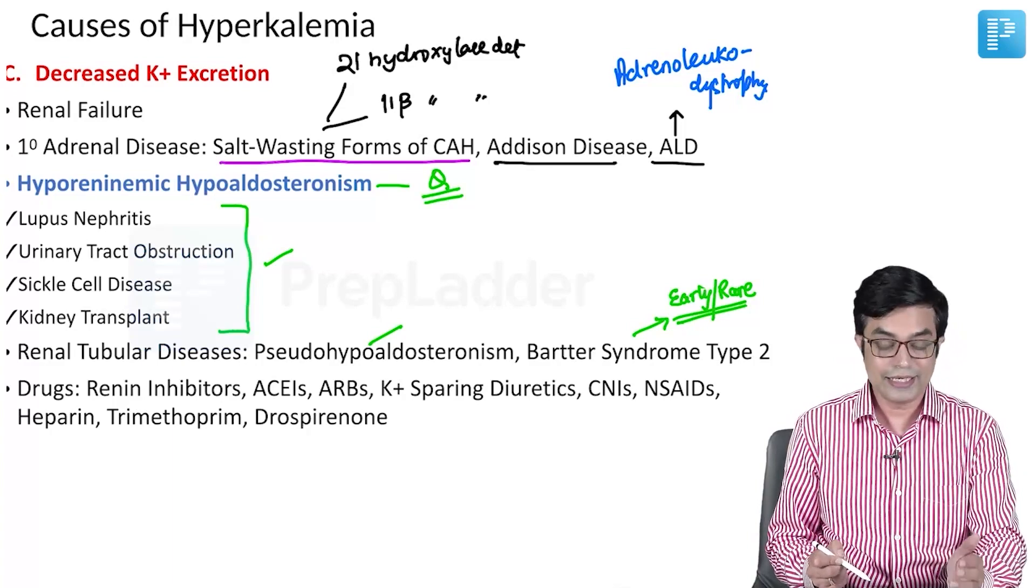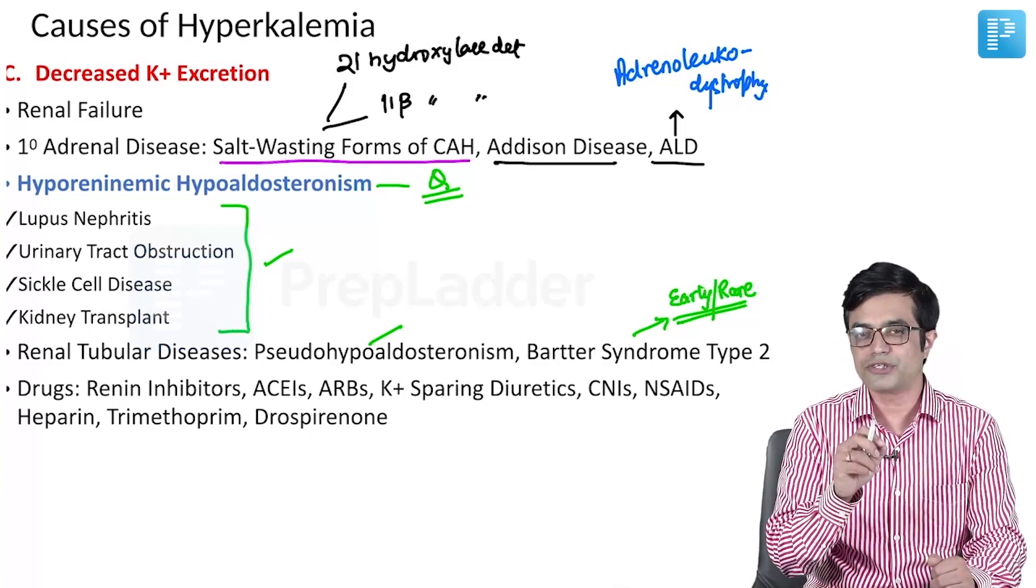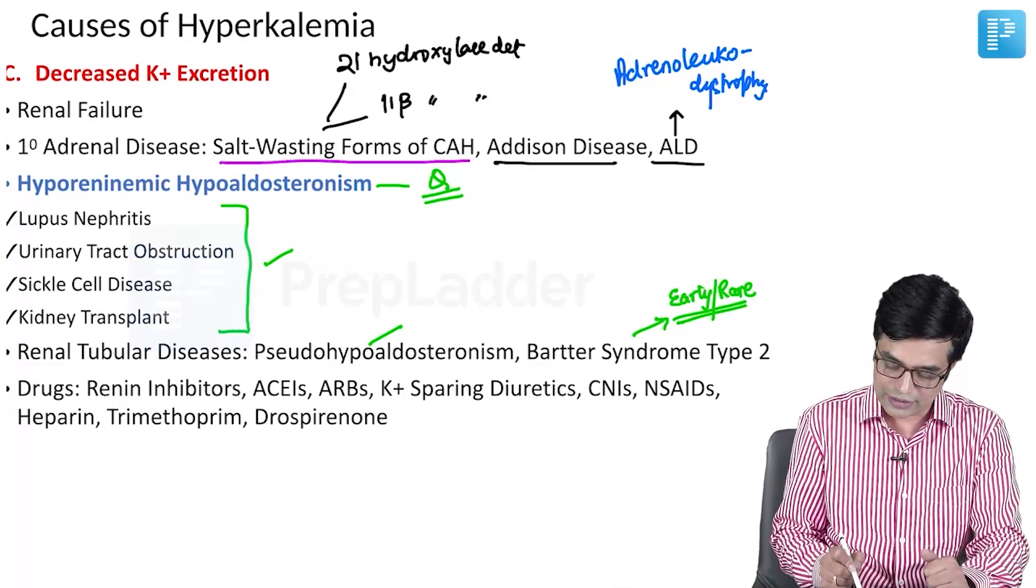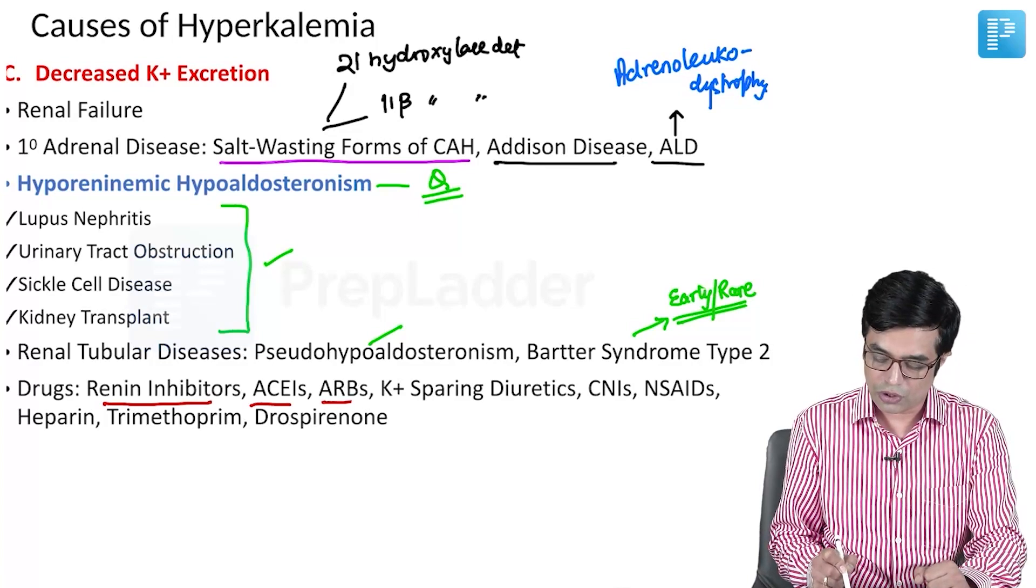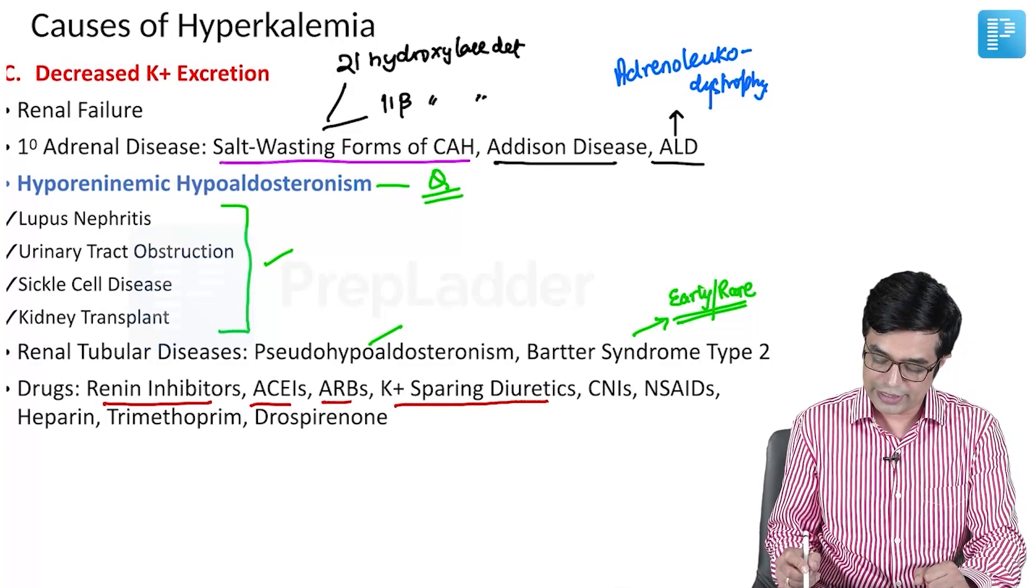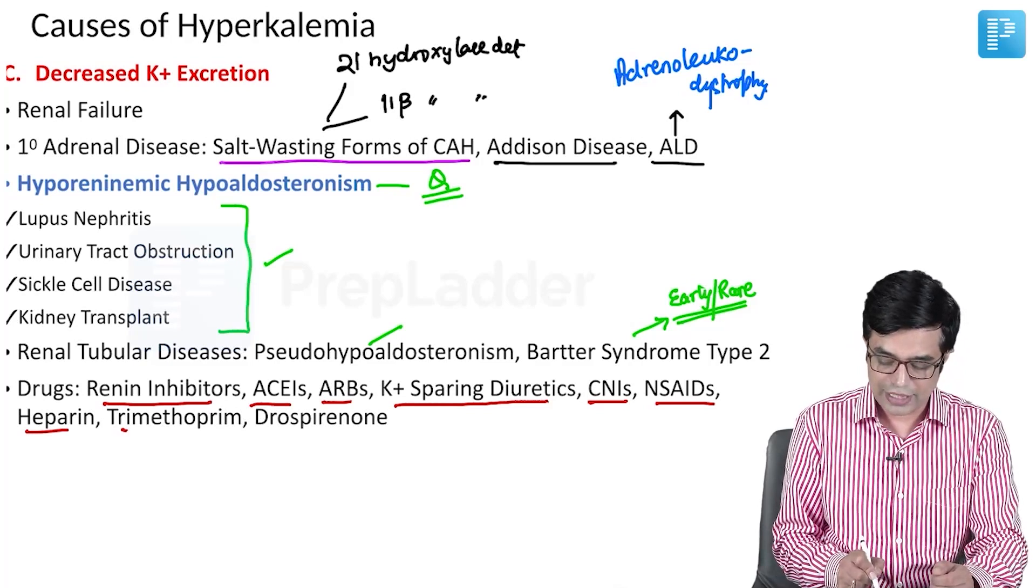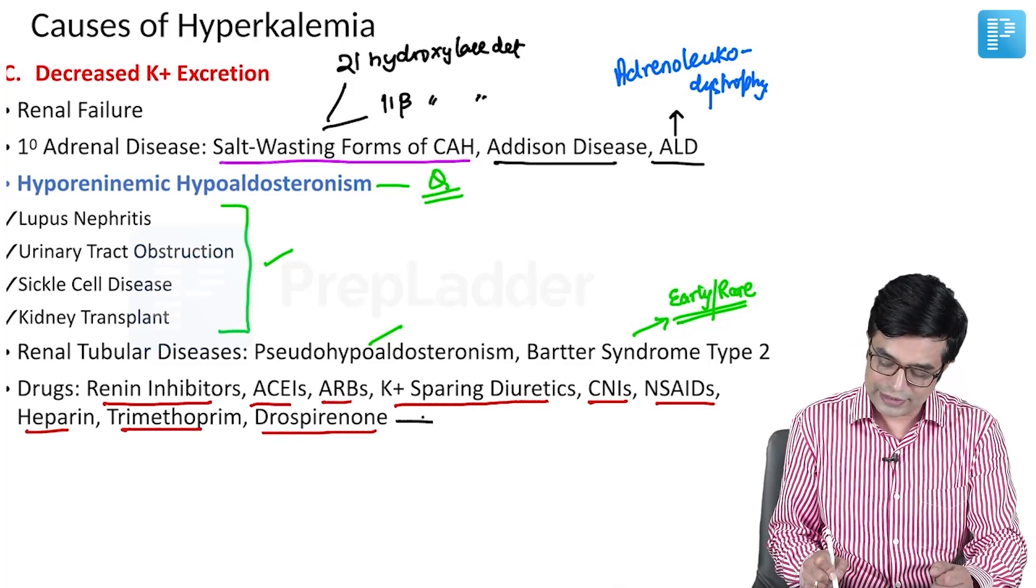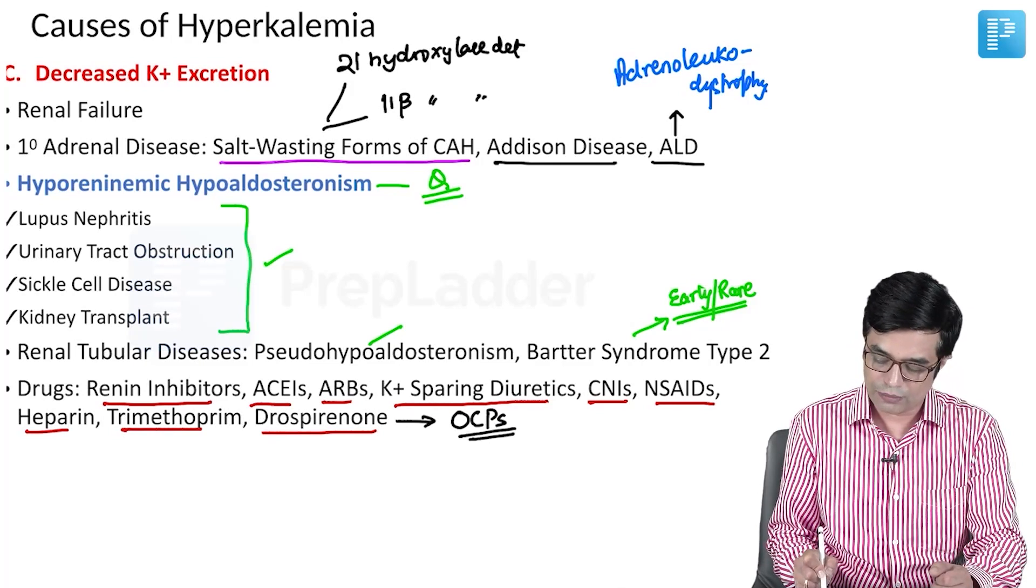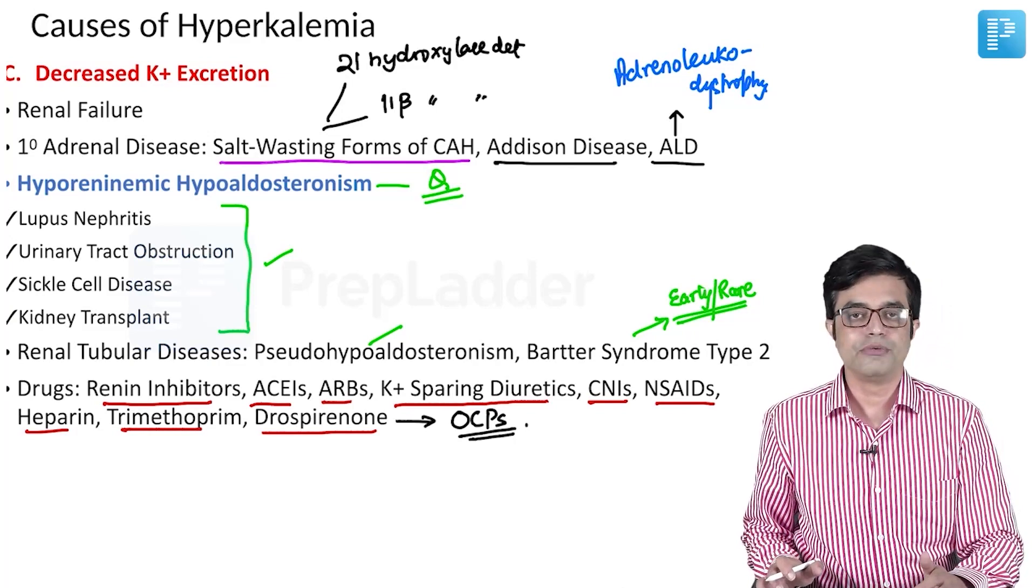Drugs which cause hyperkalemia by decreasing potassium excretion will be the drugs affecting renal function or renal blood flow directly or indirectly. It includes drugs like renin inhibitors, ACE inhibitors, angiotensin receptor blockers, potassium-sparing diuretics, calcineurin inhibitors like cyclosporine and tacrolimus, non-steroidal anti-inflammatory drugs, heparin, trimethoprim, and drospirenone. Drospirenone is present in some oral contraceptive pills. These are the major causes of hyperkalemia that you need to remember.